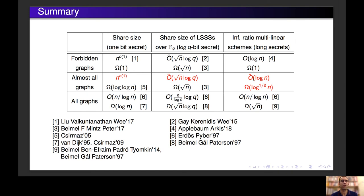Another thing to mention is that we found that almost all graphs admit schemes with information ratio Õ(log n), while there are graphs that require information ratio Ω(√n). That is, for the information rate of multi-linear schemes, almost all graphs are not the hardest.